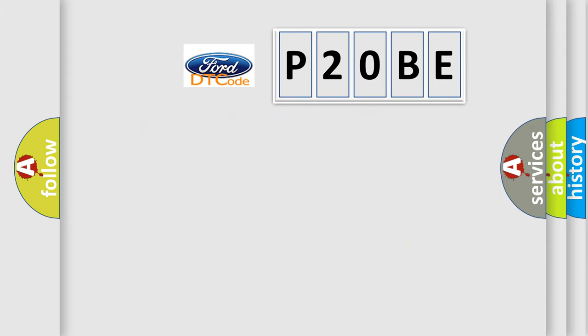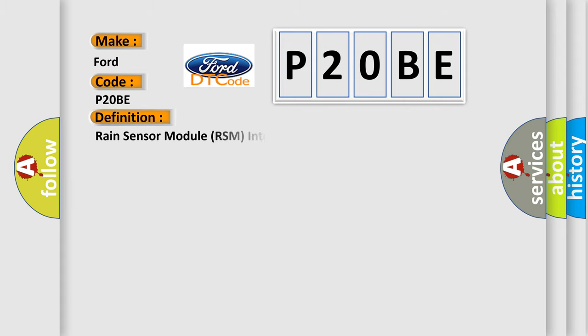So, what does the diagnostic trouble code P20BE interpret specifically? For Infiniti car manufacturers, the basic definition is rain sensor module RSM internal.